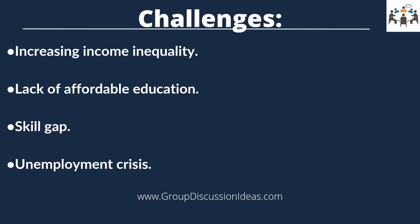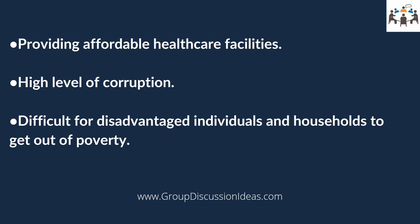Solving the unemployment crisis is one of the most important challenges. The high cost of healthcare facilities makes it difficult for poor people to avail advanced healthcare in India, and providing affordable healthcare for all is a big challenge. India continues to have a high level of corruption in numerous areas, including the job market and infrastructure development. All these issues make it difficult for disadvantaged individuals and households to get out of poverty, and also make those who do more vulnerable to falling back into it, even after receiving government support.